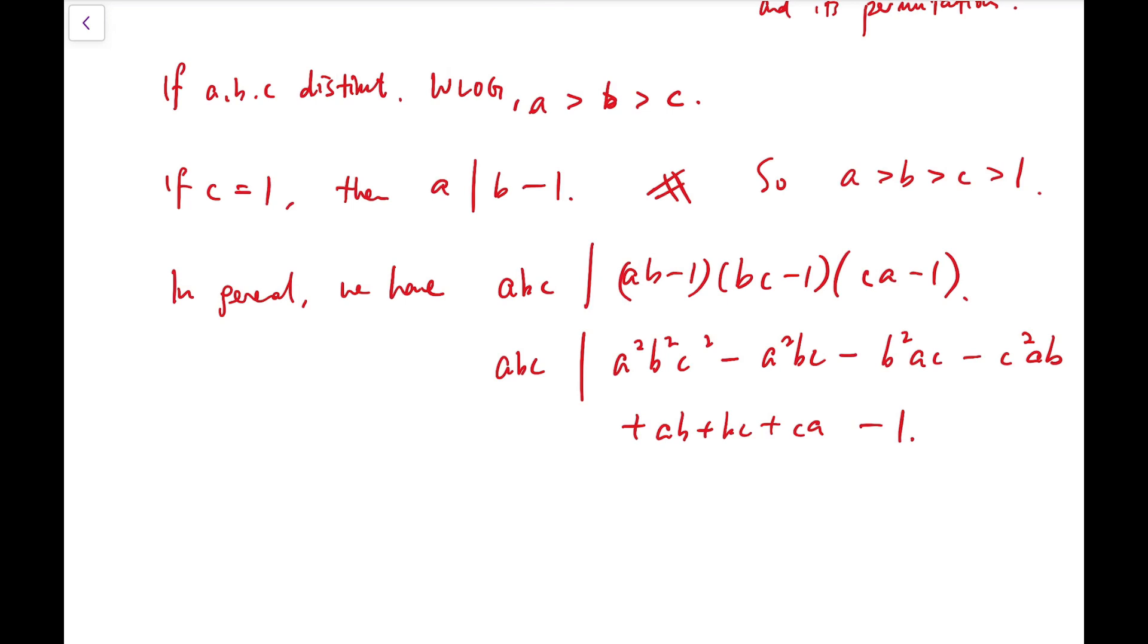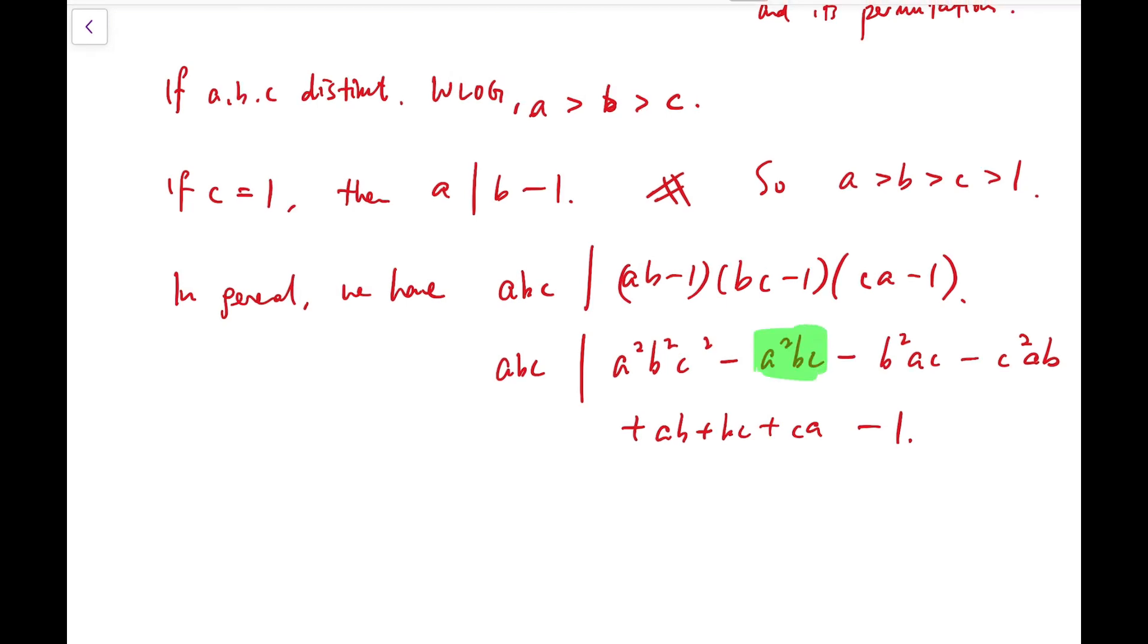Just to share with you a quick way to multiply these expressions. Whenever you see a term in this form, A² times BC, that's obtained by, say, multiplying AB and CA, then you know that terms of similar shape should appear. What if the squared variable is not A, it's B instead? So we have B² times the other two variables, which are AC. Similarly, I can say the third variable, C², should also multiply by A and B. So that's how we speed up our expansion.